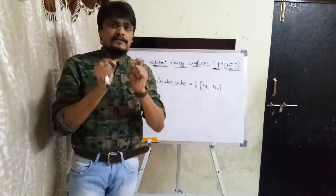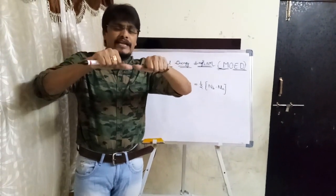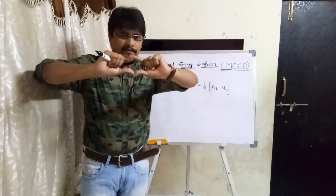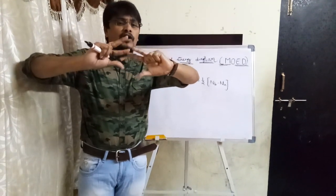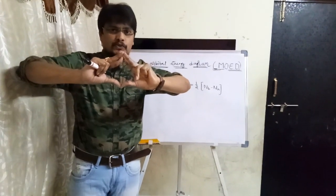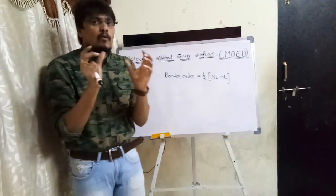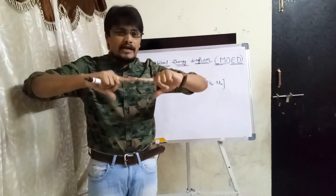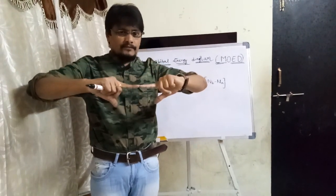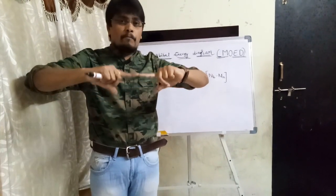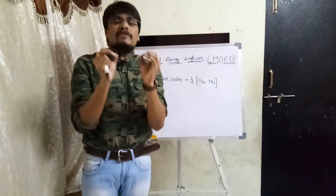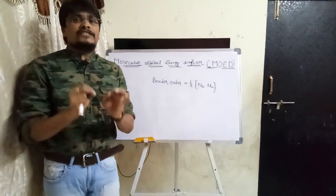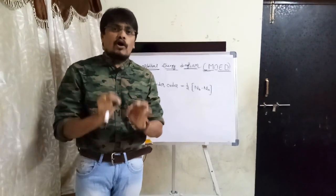If the Bond Order is 1, a single bond exists between two adjacent atoms in the molecule. If the Bond Order is 2, then a double bond exists. If the Bond Order is 3, then a triple bond exists. Based on the Bond Order, we can know the type of bond combining the two adjacent atoms, and this calculation is only possible by constructing the Molecular Orbital Energy Diagram.